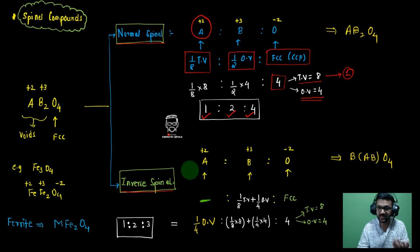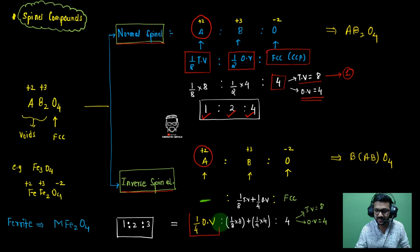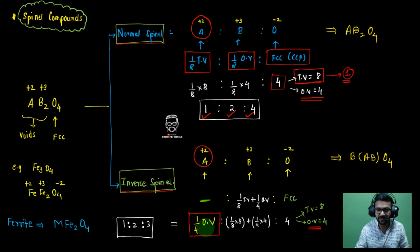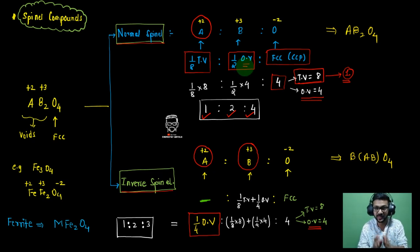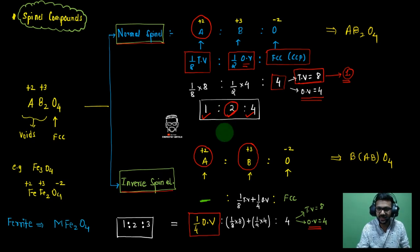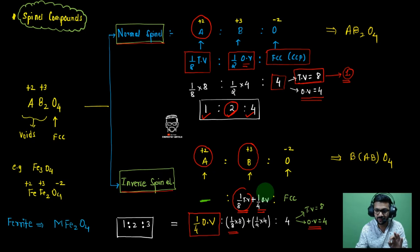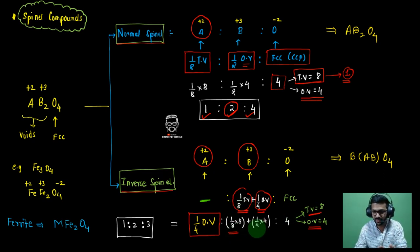In inverse spinel, the positions are swapped. A, which was in a tetrahedral void, is now in an octahedral void — specifically 1/4 of the octahedral voids. B (+3), which was only in octahedral voids, is now split: 1 atom goes to octahedral and 1 atom goes to tetrahedral. This gives B occupying 1/4 of octahedral voids and 1/8 of tetrahedral voids. The overall ratio remains 1:2:4, and we call this an inverse spinel.